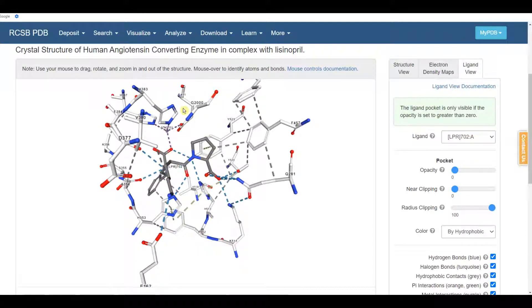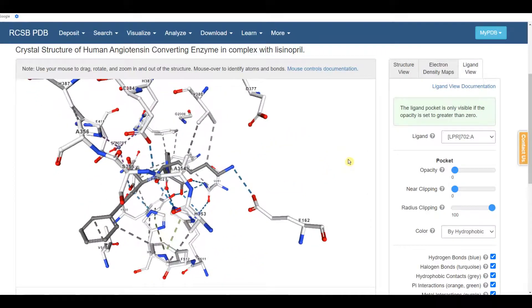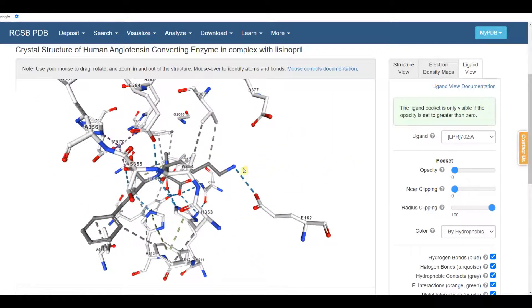And I admit, it takes some practice to get used to looking at these structures. But the program is showing us every possible interaction. If we hover over some of these lines, here's a nice one. This is a line between lisinopril and one of the amino acid residues. Just hover over that. That is a hydrogen bond.